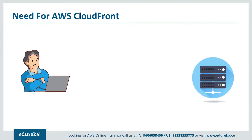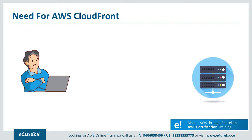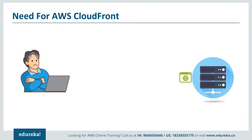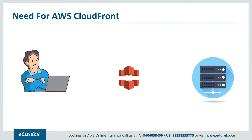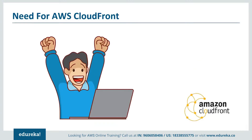If you are based in the USA, the situation would be more convenient if the data were delivered from somewhere close by. In a traditional system, your request is sent to the server based in Australia, it processes that request, and then the data is delivered to you. But if you have something like CloudFront, it sets up an intermediate point where your data gets cached first, and this cached data is made available to you on request — meaning delivery happens faster and you save a lot of time.